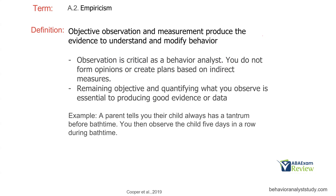Empiricism: objective observation and measurement produce the evidence to understand and modify behavior. When we talk about empirical evidence, we talk about proven scientific research through objective observation and measurement. The key word for empiricism is observation — we want to observe what is happening and then measure it to produce evidence for understanding and modifying behavior. We do not form opinions or create plans based on indirect measures. An interview is not enough. Document review is not enough. We need empirical observation.